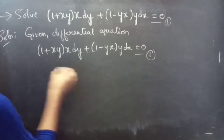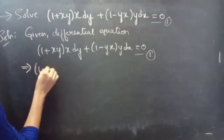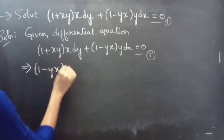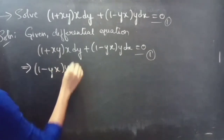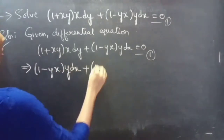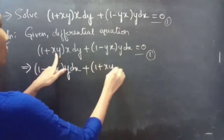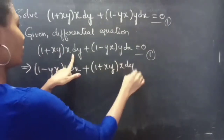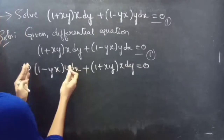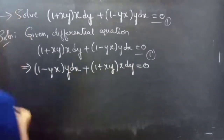We can rewrite it as (1 − yx)·y·dx + (1 + xy)·x·dy = 0, which is of the form M dx + N dy = 0.